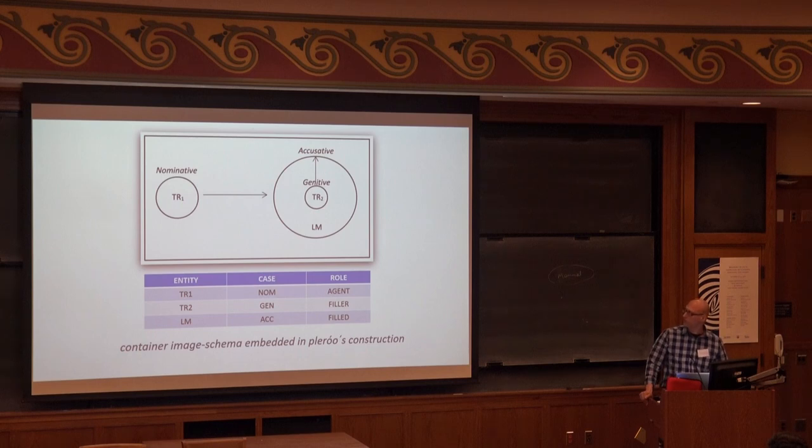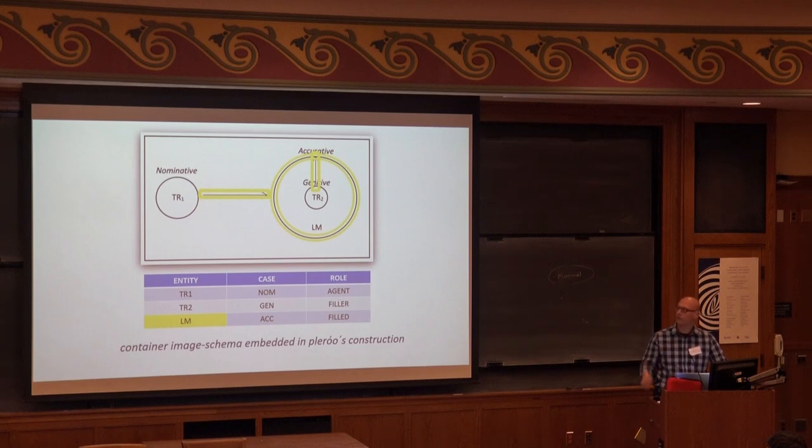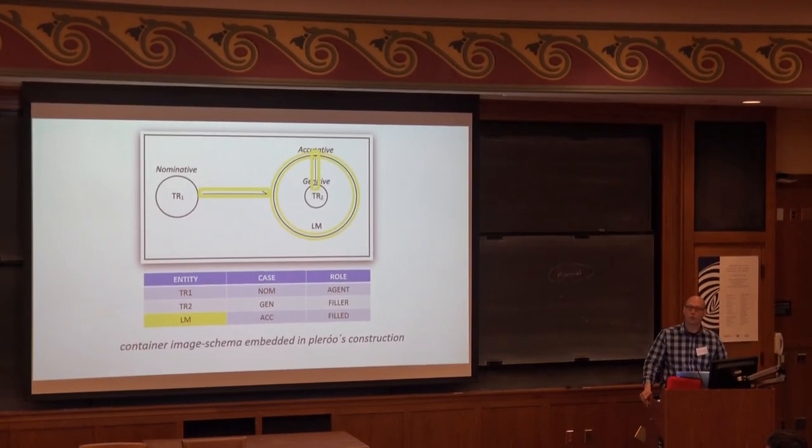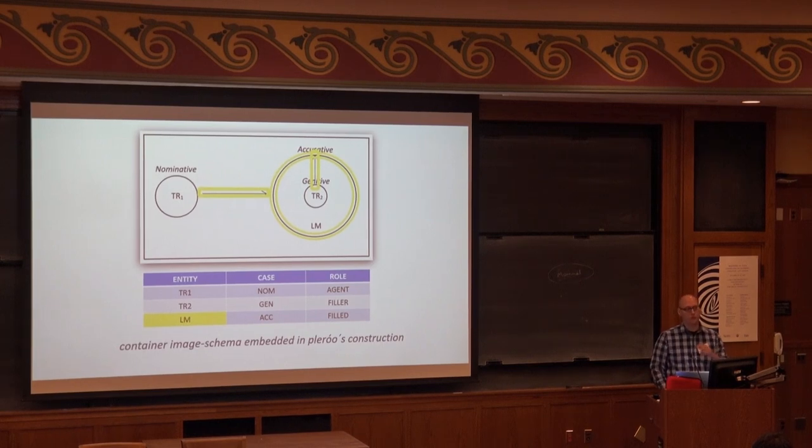The landmark participates in two relations. The one relation is the trajector, who is acting over the container. And the other is the second trajector, which is the filler. So we have an interesting case where the landmark of the container participates in two relations: one with the first trajector and the second relation with the second trajector, which is the filler expressed in genitive.